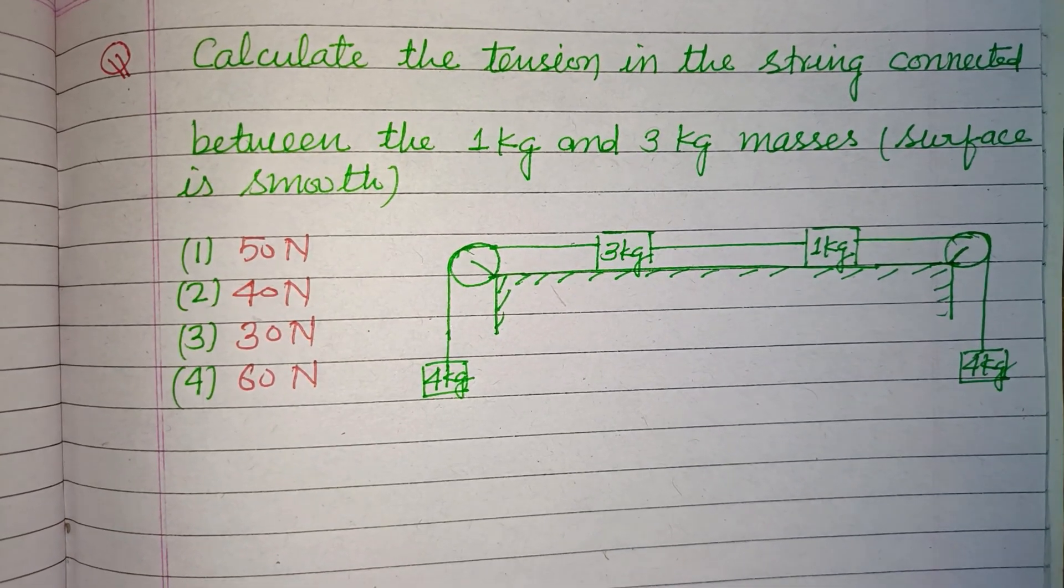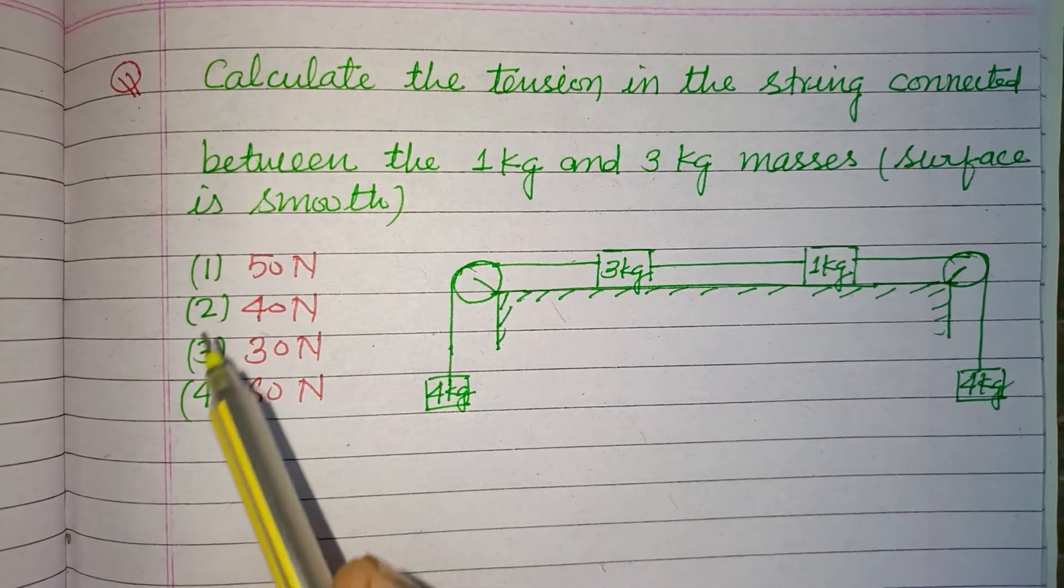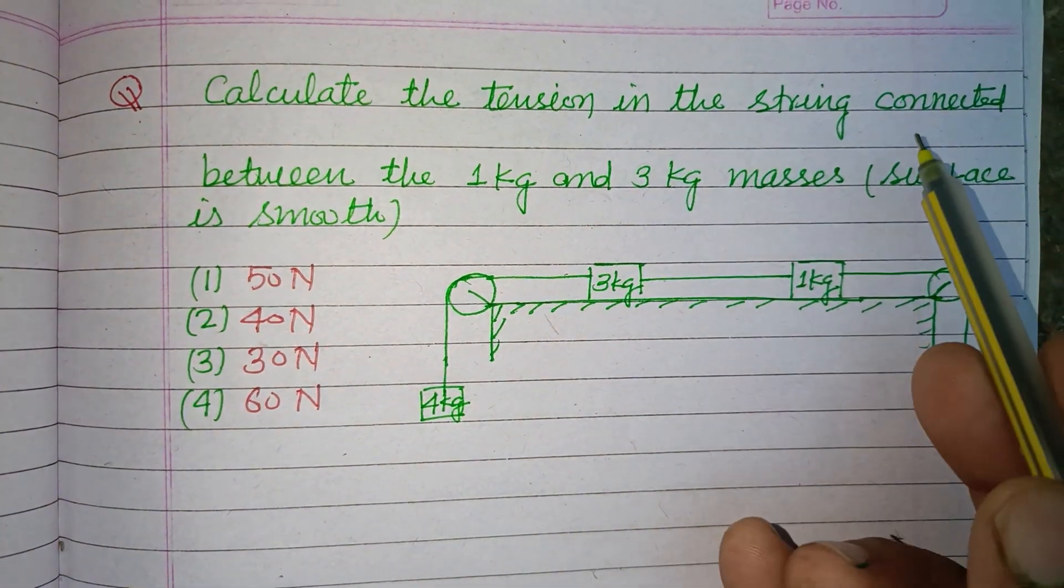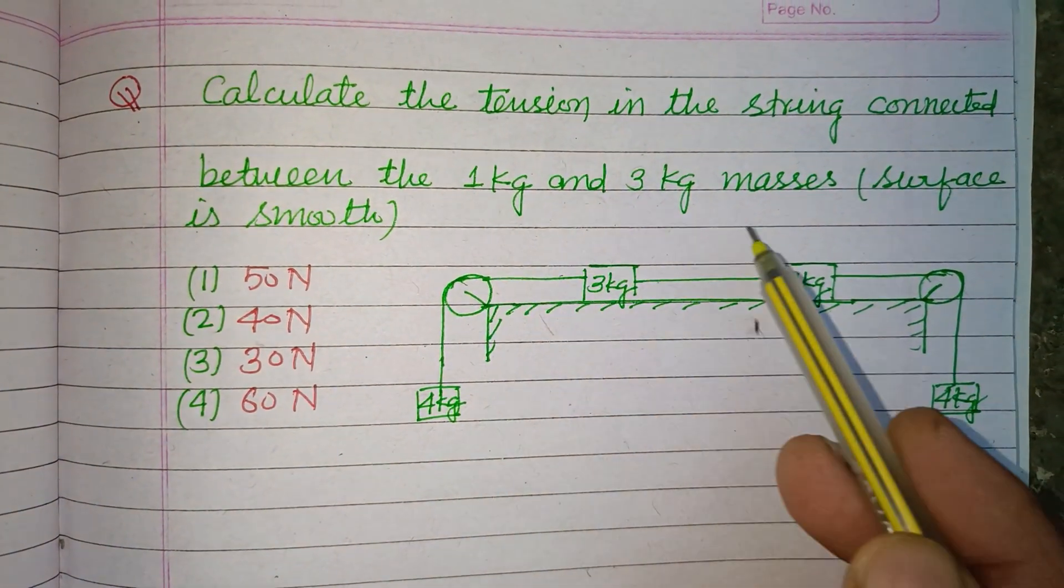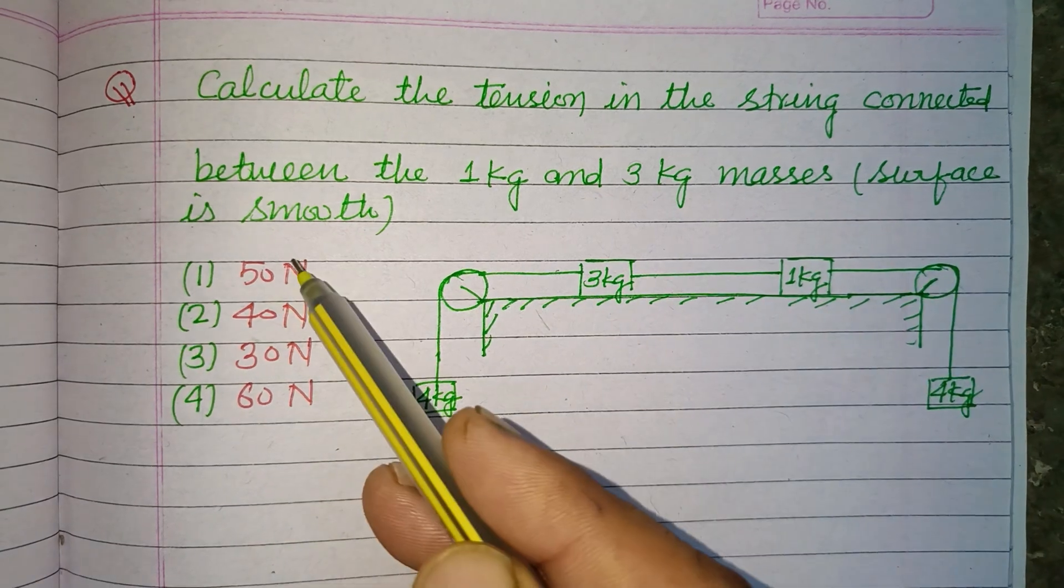Hello viewers, warm welcome to this YouTube channel. The question is: calculate the tension in the string connected between 1 kilogram and 3 kilogram masses. Surface is smooth.